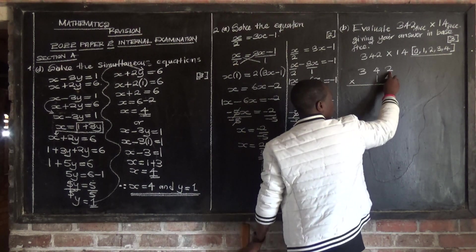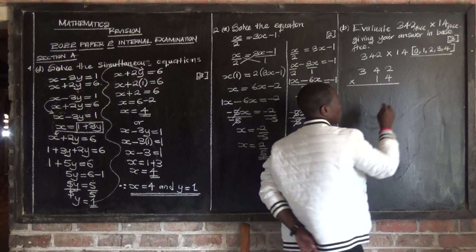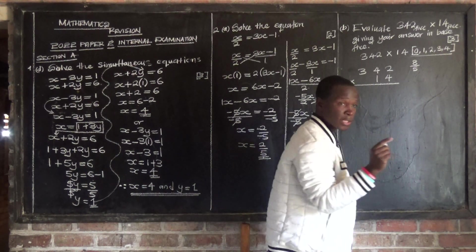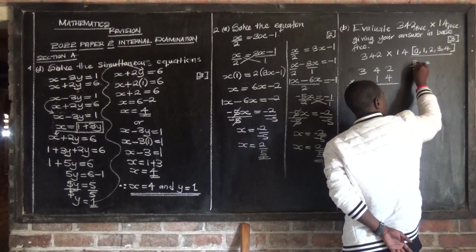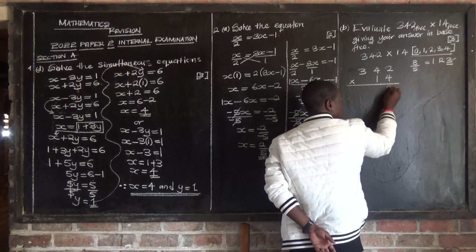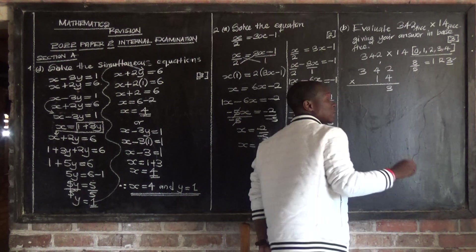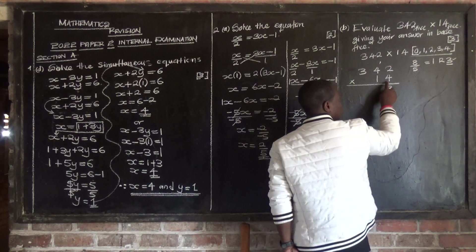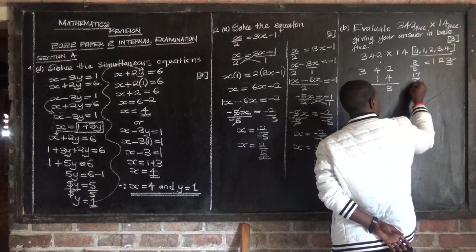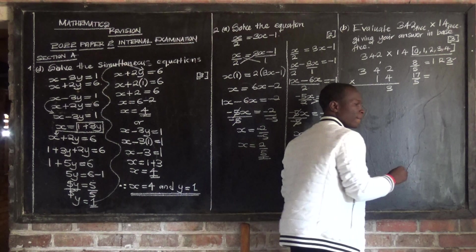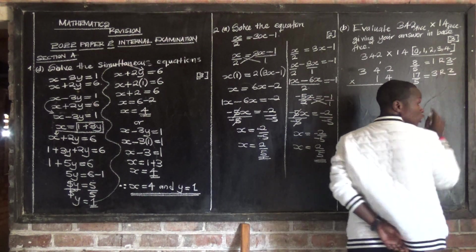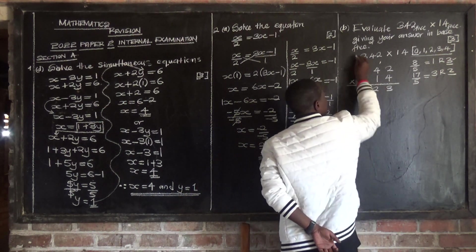Starting with 4 times 2: that's 8. We don't write 8 in base 5, so 8 divided by 5 — 5 goes into 8 once with remainder 3. Write the remainder 3 and carry forward 1. Then 4 times 4 is 16, plus the carried 1 is 17. 17 divided by 5: 5 goes into 17 three times with remainder 2. Write remainder 2 and carry forward 3.